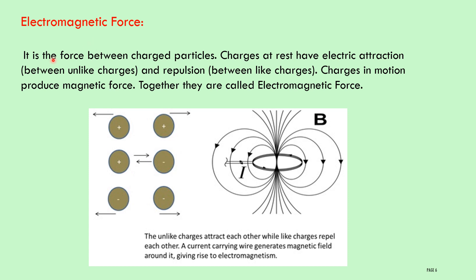Electromagnetic force is the force between charged particles. Charges at rest have electric attraction between unlike charges and repulsion between like charges. Positive-positive charges repel each other; negative-negative charges also repel each other; but positive and negative charges attract each other. When charges are in motion, they produce a magnetic force. Together, these are called electromagnetic forces.